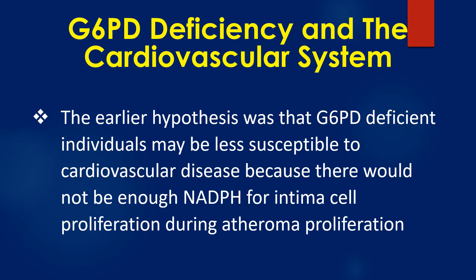The earlier hypothesis was that G6PD deficient individuals may be less susceptible to cardiovascular disease because there would not be enough NADPH for intimal cell proliferation during atheroma production.